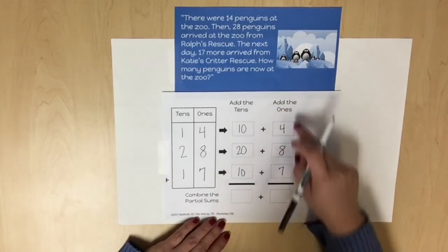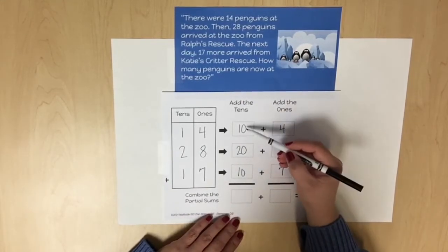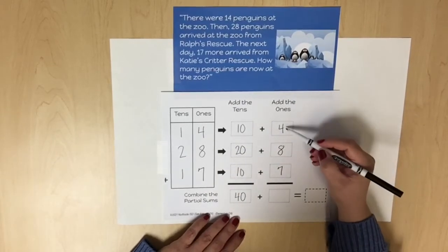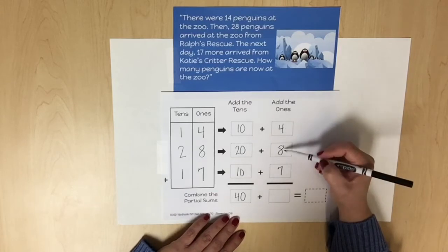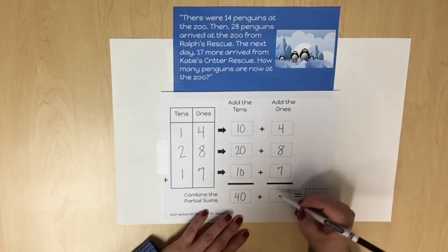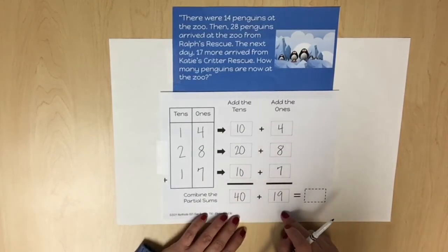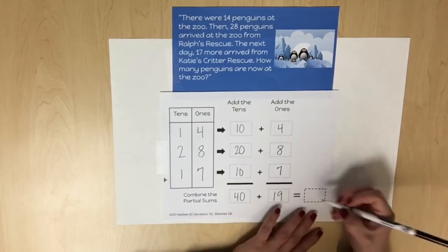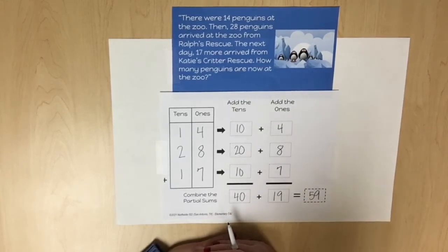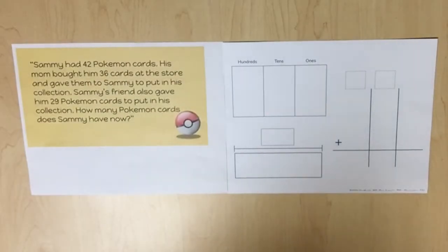Now I'm going to add up the partial sums. I'll start in the tens place: 10 plus 20 plus 10 is 40. For the ones: 8 and 4 is 12, plus 7 is 19. Then I'm going to add my partial sums: 40 and 19 is 59. There were a total of 59 penguins at the zoo.